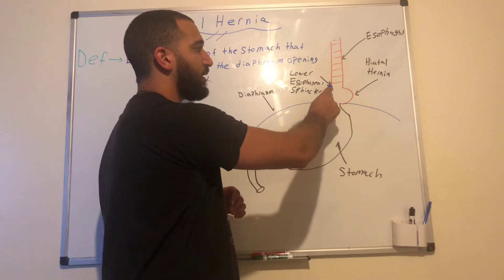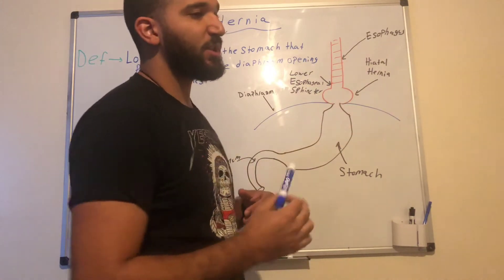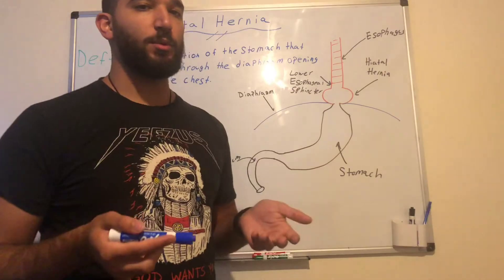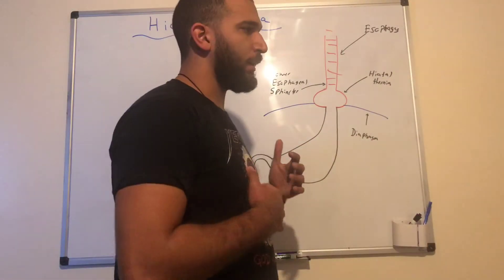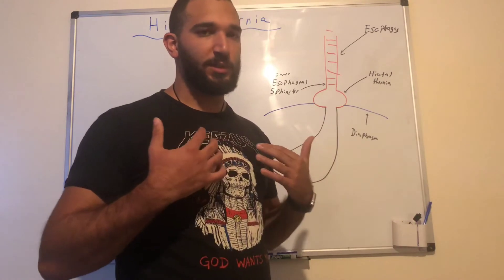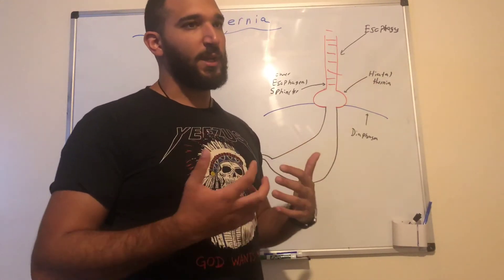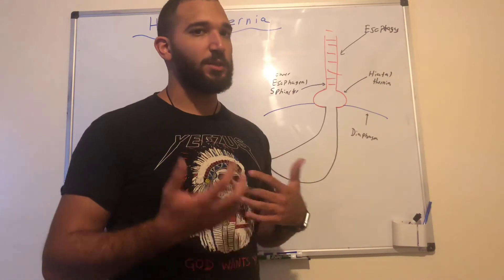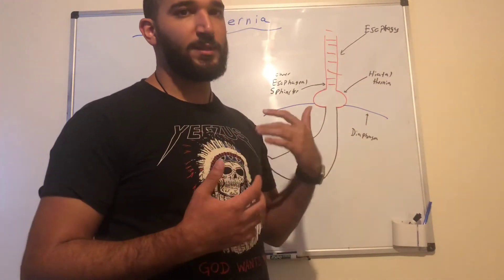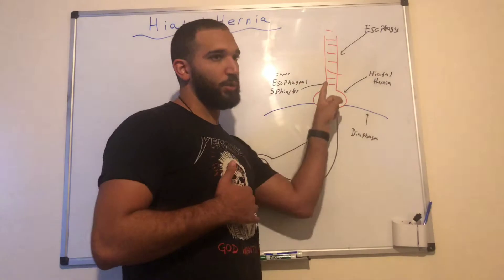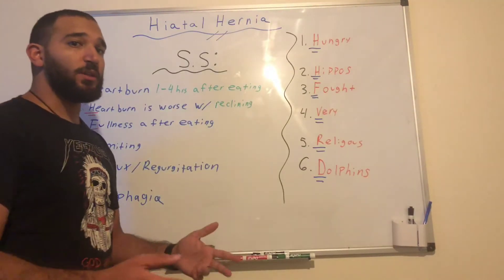A hiatal hernia occurs typically due to obesity or pregnancy. The lower portion of the stomach penetrates through the diaphragm wall, causing a hernia to occur. The diaphragm is a muscle that wraps around and keeps everything mostly in place, but over time with abdominal obesity or pregnancy, the lower esophagus and upper stomach push through the diaphragm, causing symptoms.